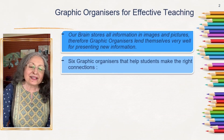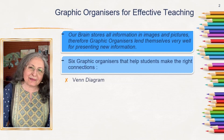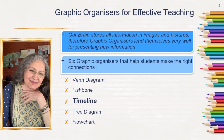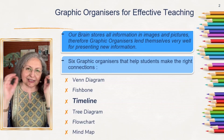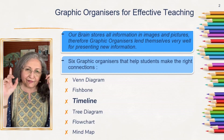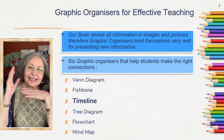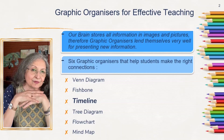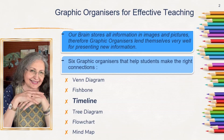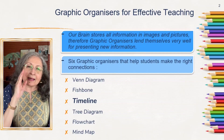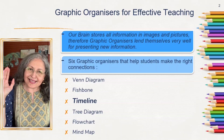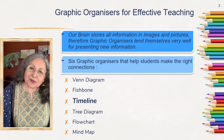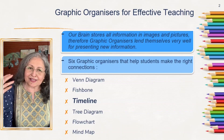We have been recommending six graphic organizers. We've already talked about the Venn diagram and the fish bone. Today we're talking about the timeline. The timeline is a chronological plotting of events. In the Venn diagram we discussed comparing and contrasting; the fish bone was about cause and effect analysis. The timeline is about plotting events according to their occurrence in time.